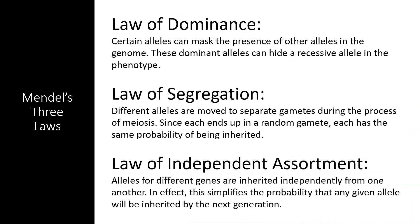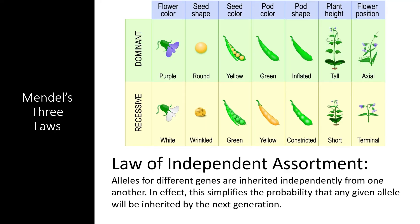By contrast, the Law of Independent Assortment can only be seen when you look at two different traits at the same time. This law states that different genes are inherited independently from one another. For example, the gene controlling a plant's flower color is not connected to the gene controlling pod color. A plant can inherit purple flowers and yellow pods, white flowers and green pods, or any other combination of these two traits.